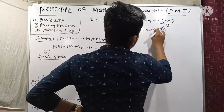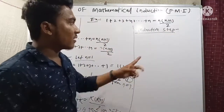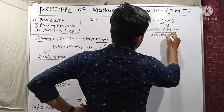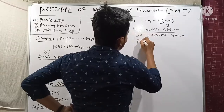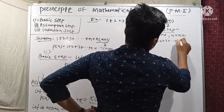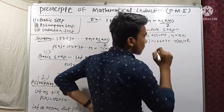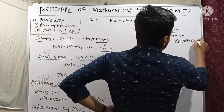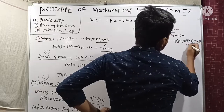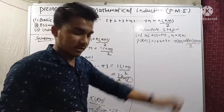Inductive step: Let us assume n = k+1. Then P(k+1) = 1 + 2 + 3 + ... + k + (k+1) = (k+1)(k+1+1)/2 = (k+1)(k+2)/2.